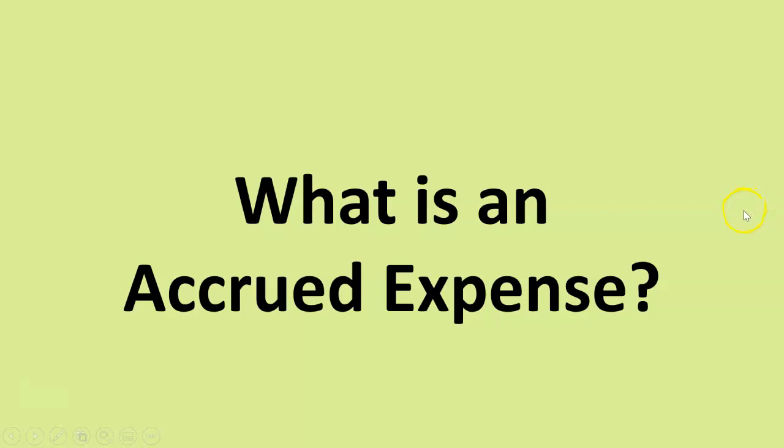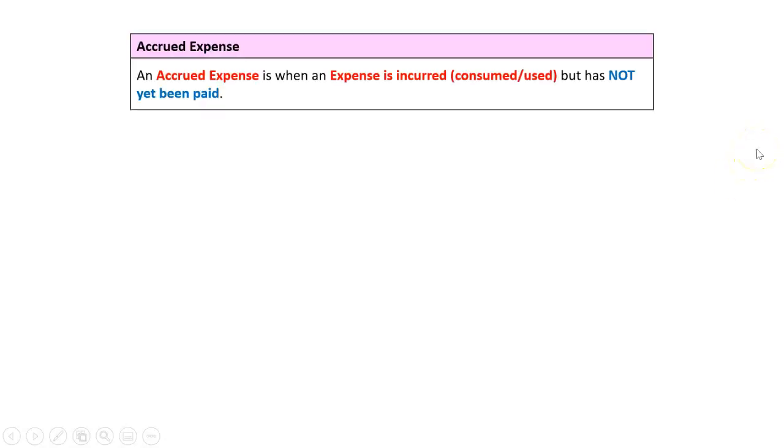Now that we've done prepaid expenses, we need to move on to accrued expenses, and we should actually see that when we learn what an accrued expense is, we can almost think of it as the exact opposite of a prepaid expense. An accrued expense is when an expense has been incurred or consumed or used, but has not yet been paid.